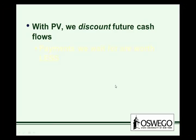With present value, we discount future cash flows, right? With future value, we're compounding money today into what it would be worth in the future. But with present value, we have a future cash flow and we're discounting it to equivalent amount today.